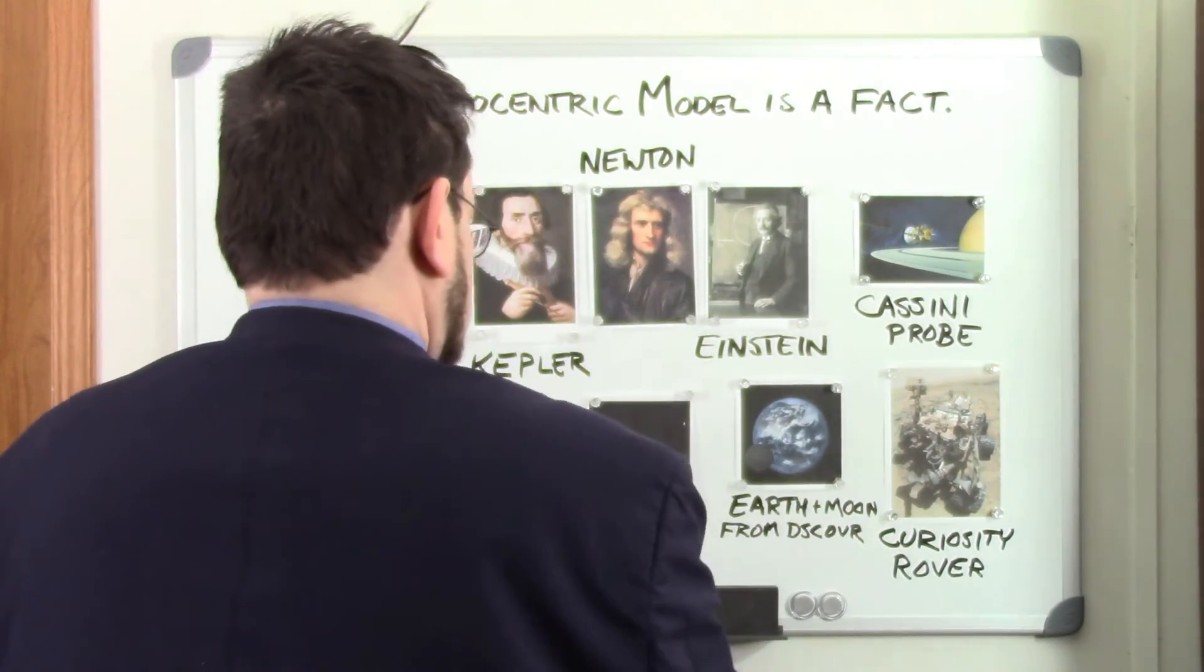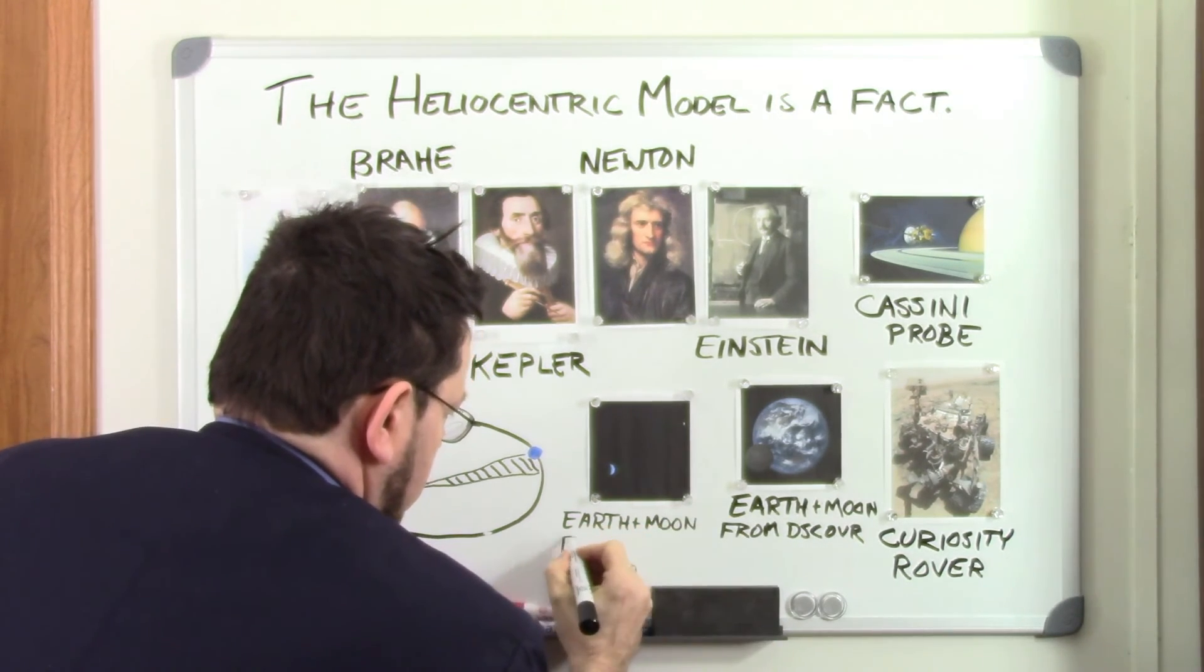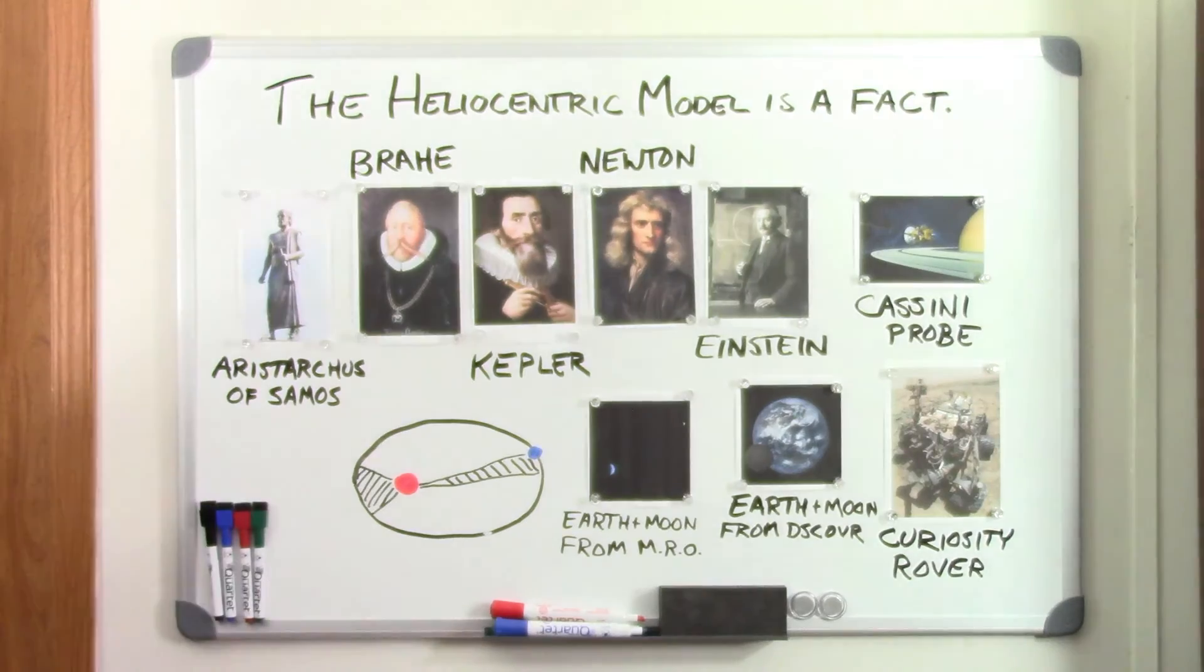The weight of the evidence now is simply overwhelming. It has been confirmed to such a degree that it would be perverse to withhold provisional assent. The heliocentric model is a fact.